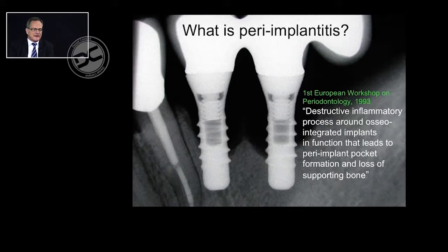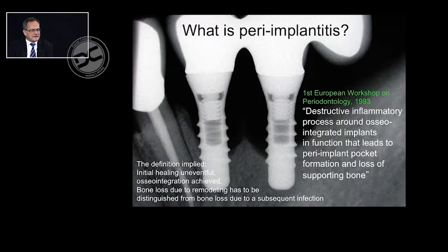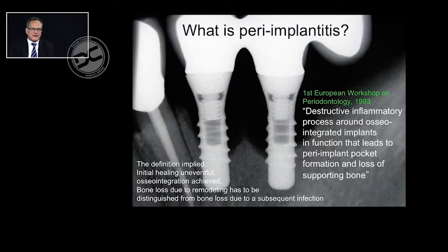Peri-implantitis has been defined as a destructive inflammatory process around osseointegrated implants in function that leads to peri-implant pocket formation and loss of supporting bone. This definition implies that the initial healing was uneventful and osseointegration was achieved. That means we are not going to talk about immediate failures of implants, but about problems that arise later on, after a successful phase where the implants served. Bone loss due to remodeling will also have to be distinguished from bone loss due to a subsequent infection.